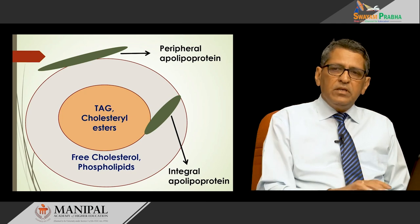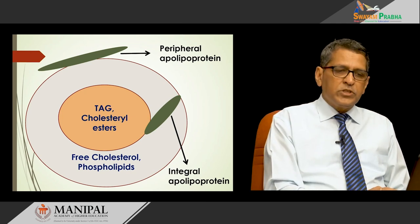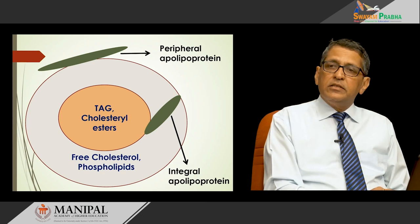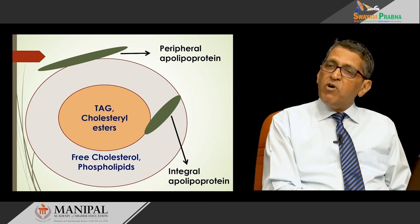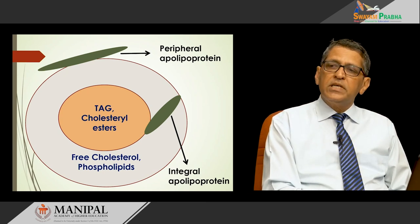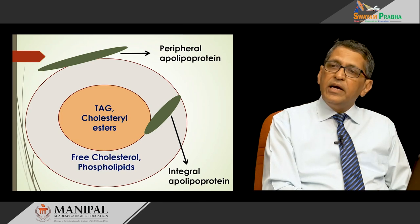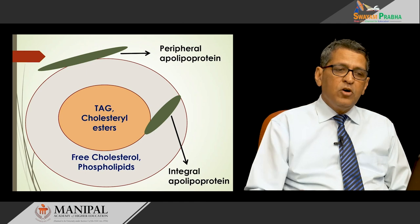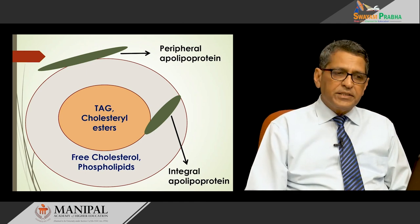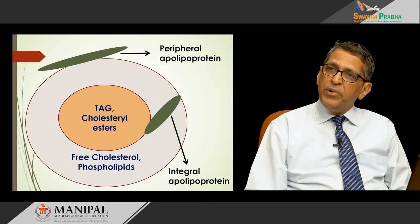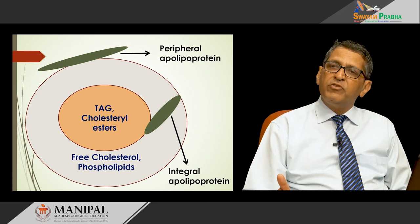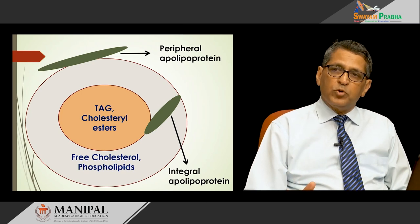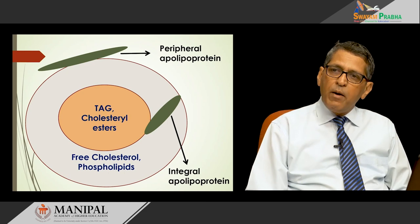The lipoprotein also has a protein portion known as the apoprotein or apolipoprotein. Some of these apolipoproteins are embedded in the layer and are known as integral apolipoproteins. Peripheral apolipoproteins are present on the outer surface of the outer shell of a lipoprotein.